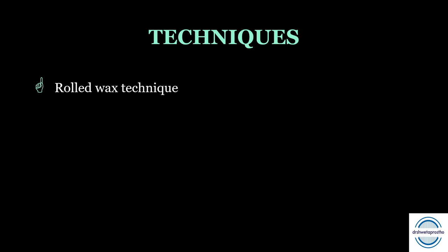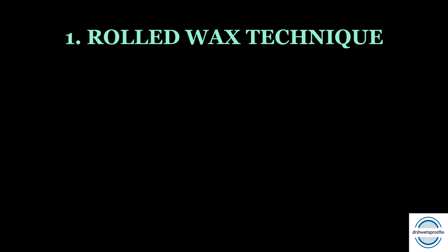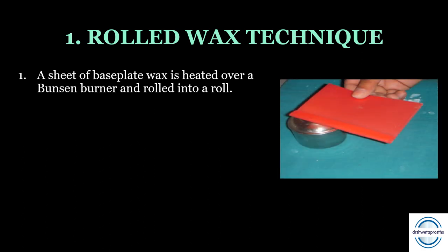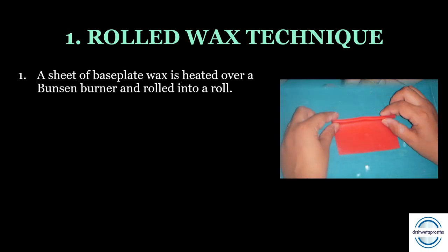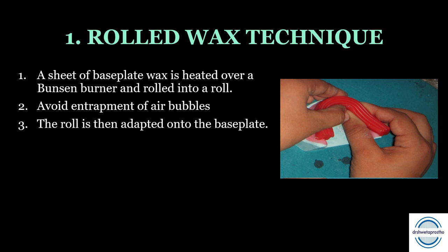There are three techniques to form occlusal rims: the rolled wax technique, preformed occlusal rims, and metal occlusal rim formers. The rolled wax technique is the most common used in preclinical exercises and clinics. A sheet of baseplate wax or modeling wax is heated over a Bunsen burner, rolled into a roll approximately four inches long, avoiding air bubble entrapment. The roll is adapted onto the base plate and shaped according to the arch form — square, tapering, or ovoid.